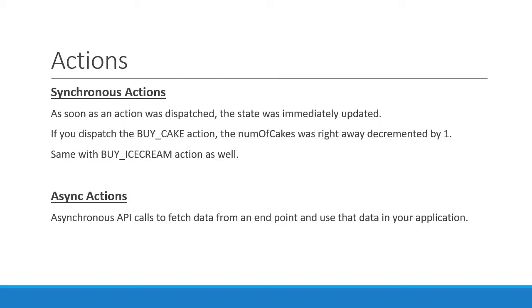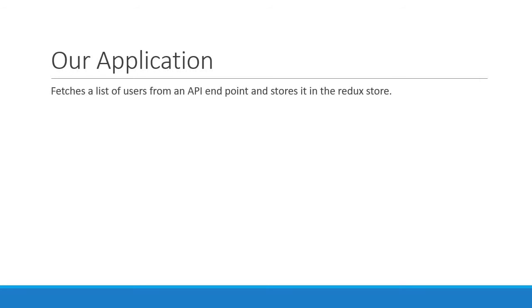But before we dive into the code on async actions let us first understand what we need to accomplish. The application we are going to build simply fetches a list of users from an API endpoint and stores it in the Redux store. So let's get an idea of how our state is going to look like, what are the different actions and how the reducer would work. Once that is clear let's write the code.